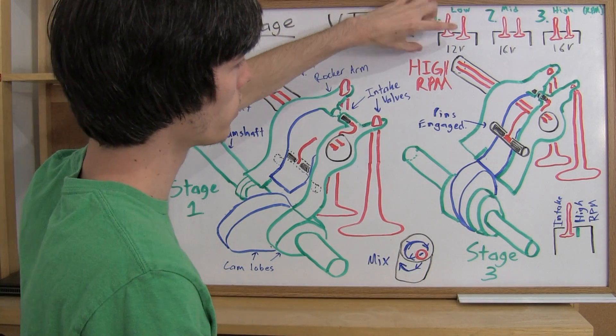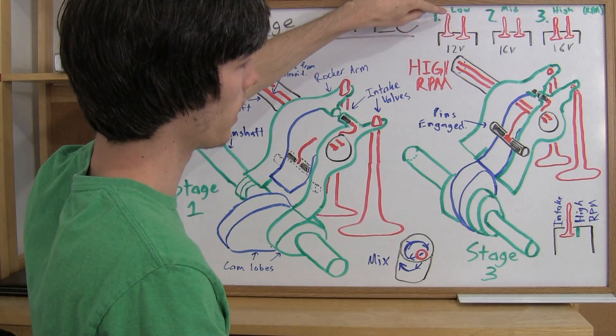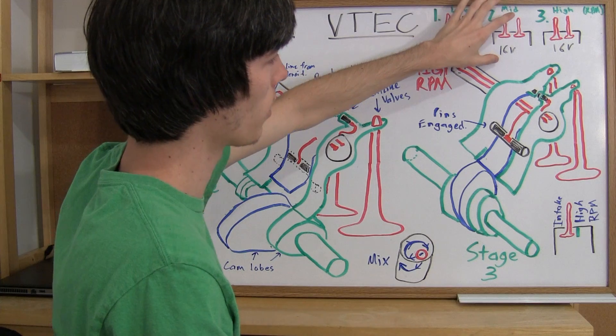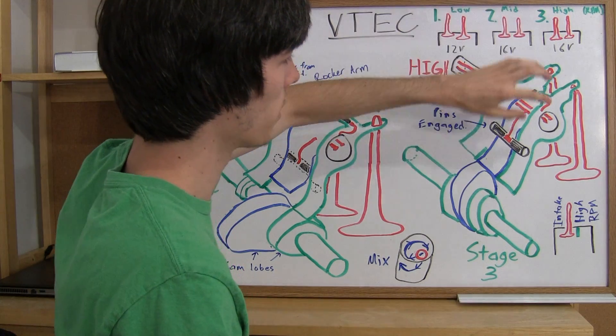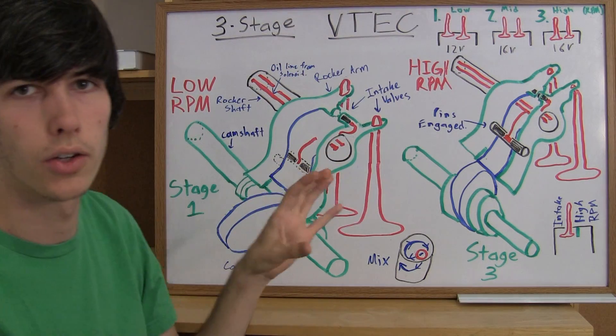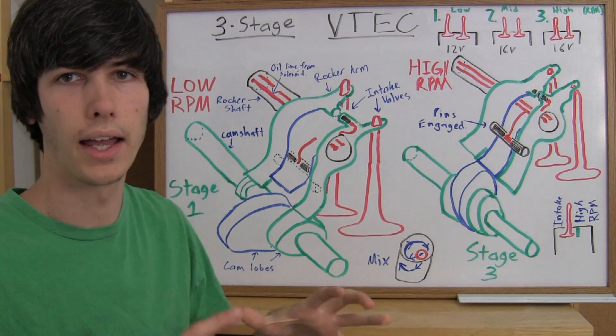So as you can see in the low range, where you've just got one valve coming down, now in the mid-range RPM, you've got two valves coming down, but not a very great distance. You're still kind of maintaining power and efficiency.